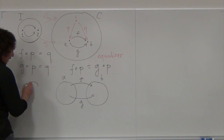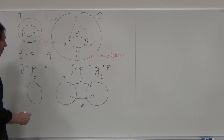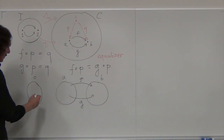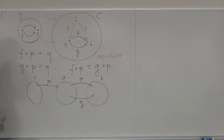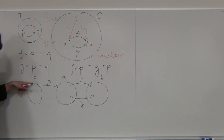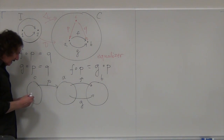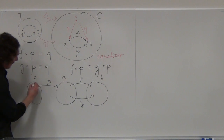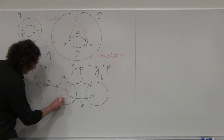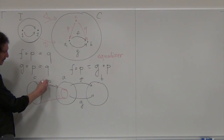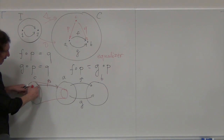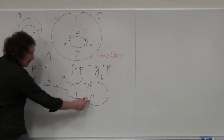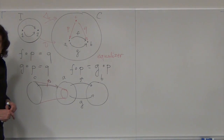We have this set C, and we have a function P — a projection. P will take this whole set C and embed it in A. So the image of C under P is a subset. P creates this subset. And now we are saying: if we follow P with G or follow P with F, we should get the same thing.